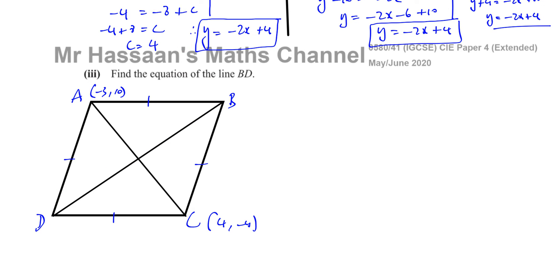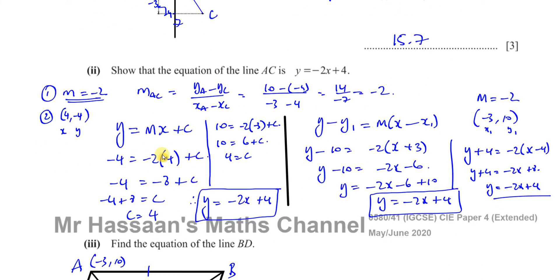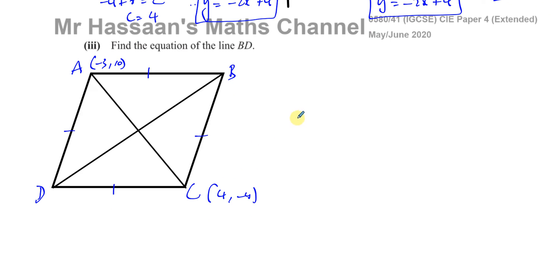This is where we need to know properties of a rhombus. One important property is that the diagonals of a rhombus intersect at right angles. The other property is that the diagonals bisect each other - they cut each other into two equal halves. So the point where they meet, let's call it M (the midpoint), cuts both BD and AC in half.